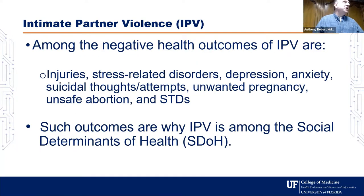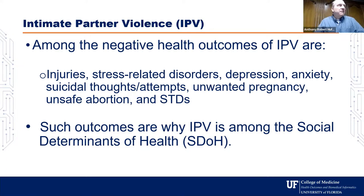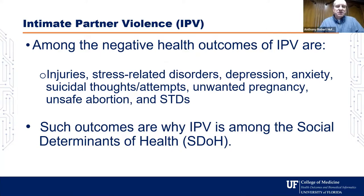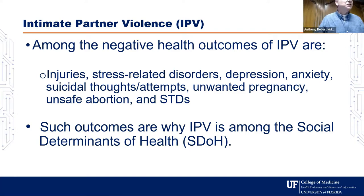These are important because intimate partner violence is associated with negative health outcomes: injuries from physical violence, stress-related disorders, depression, anxiety, suicidal ideation and attempts, unwanted pregnancy, unsafe abortions, and sexually transmitted diseases. So this is why it's a component in various instruments to assess social determinants of health.